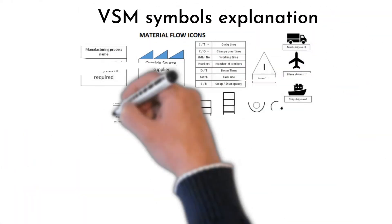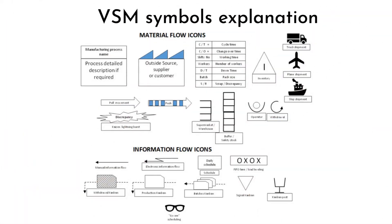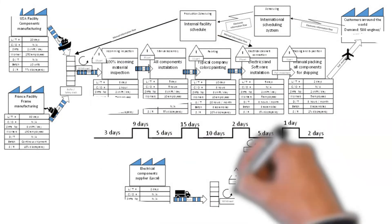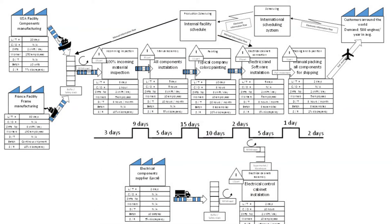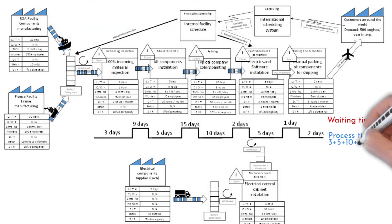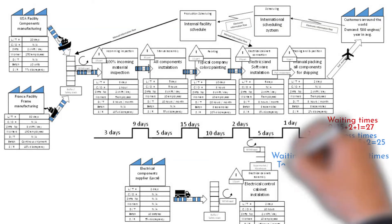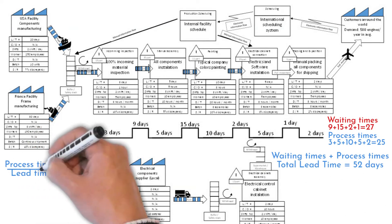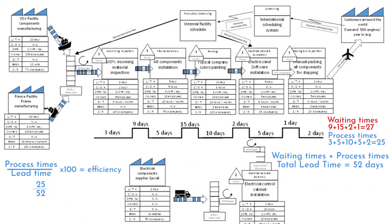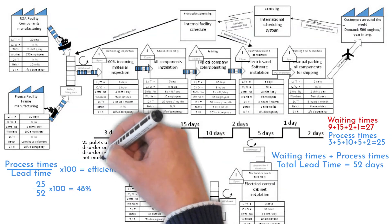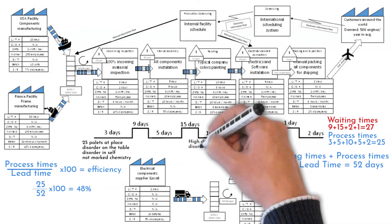There are standard symbols used in mapping — you can download them from the link below if needed. But mapping should serve the people, not the reverse, so use symbols or pictures that you and your team understand better. Great for understanding the flow over time is a timeline bar inserted below the completed map. The lower bar represents process cycle time, and the upper bar represents time between operations, called waiting time. Adding cycle times and waiting times gives us process lead time. By dividing processing time by lead time, we get process efficiency.